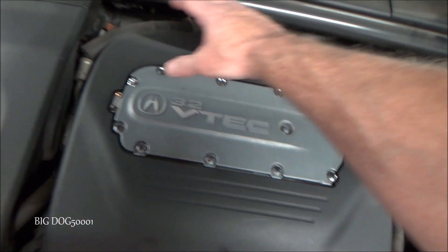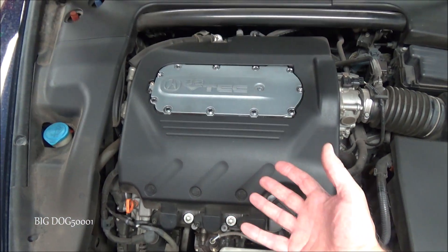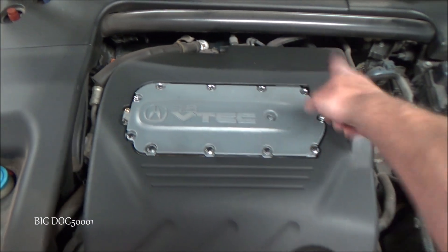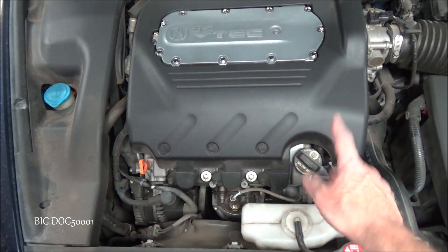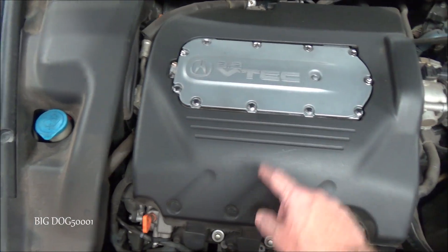Now of course back here is bank one. Up here is bank two because we have six cylinders. We got one, two, and three back there. We got four, five, and six up here. The firing order on these is 142536.